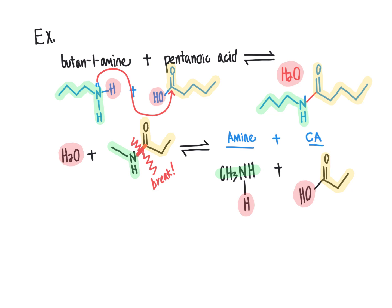As we continue into the upcoming chapter on proteins and also a chapter on enzymes, we will be applying this information. When proteins are constructed from amino acids, the forward reaction takes place — forming amide bonds out of amino acids to make protein chains. On the other hand, when proteins are catabolized and broken down into their individual amino acids, the reverse reaction uses water to lyse or break the amide bond and release amines and carboxylic acids.